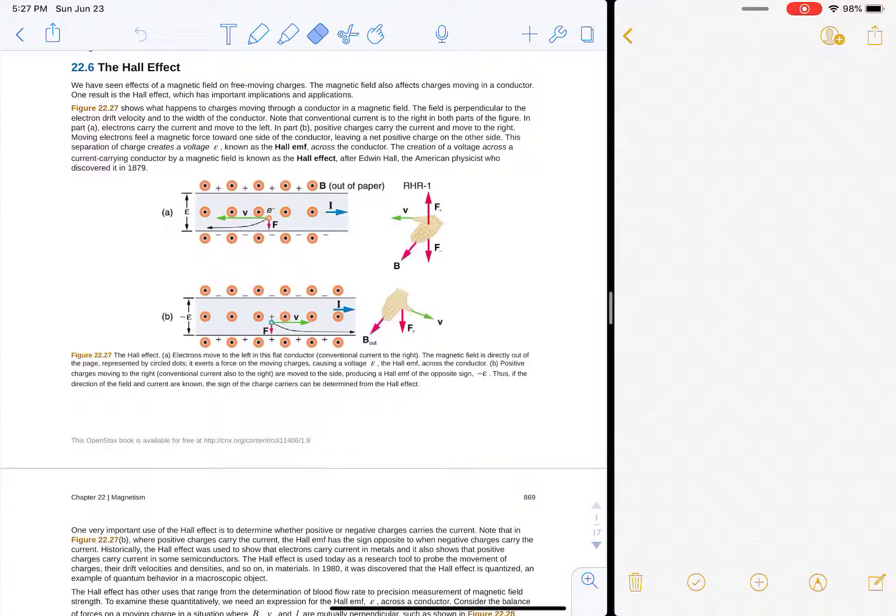All right, now let's talk about 22.6 to 22.9, starting with the Hall effect. So the Hall effect is if you've got a conductor, like a wire, and you've got a current flowing through the wire, and you put that current into a magnetic field.